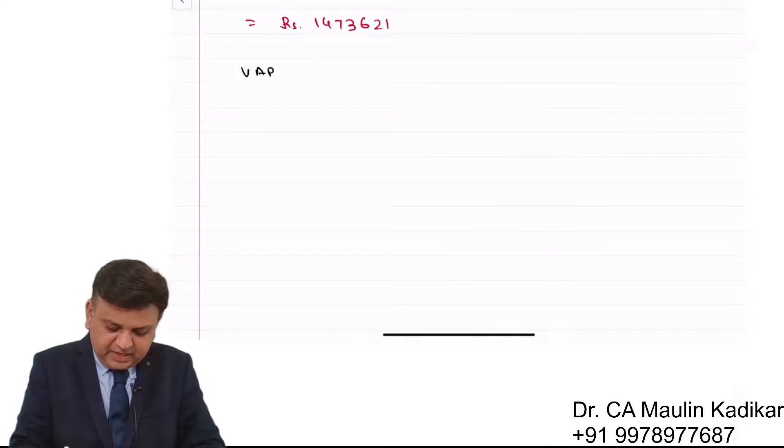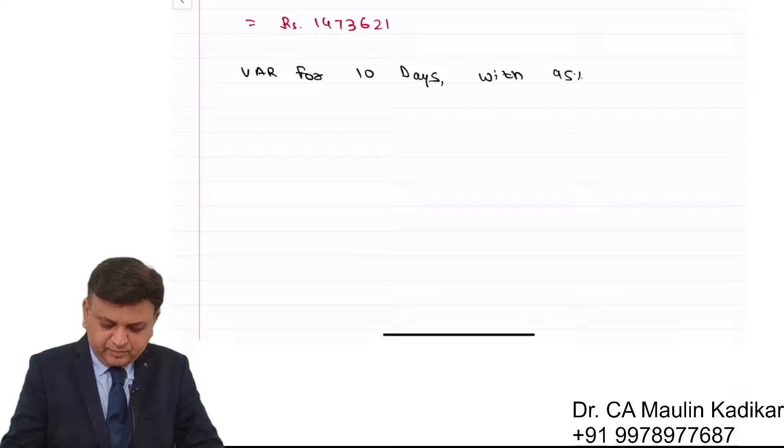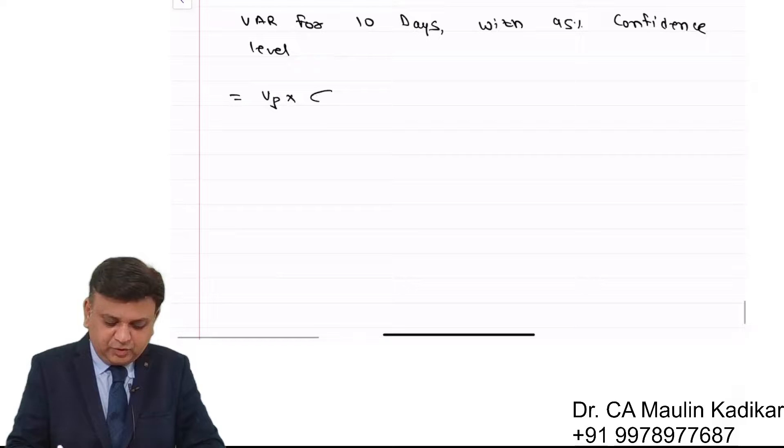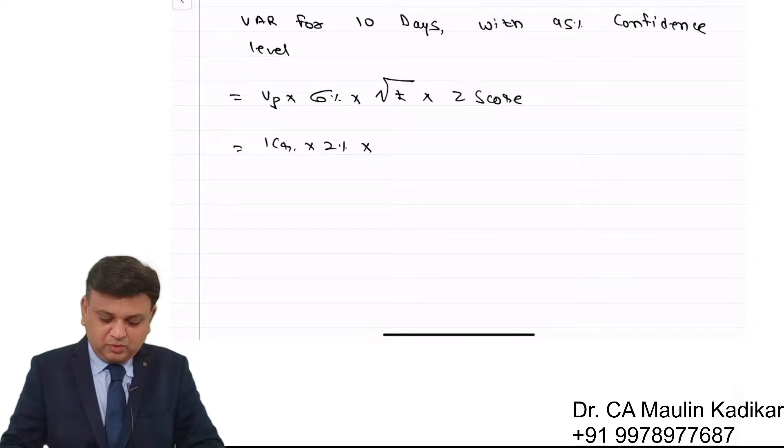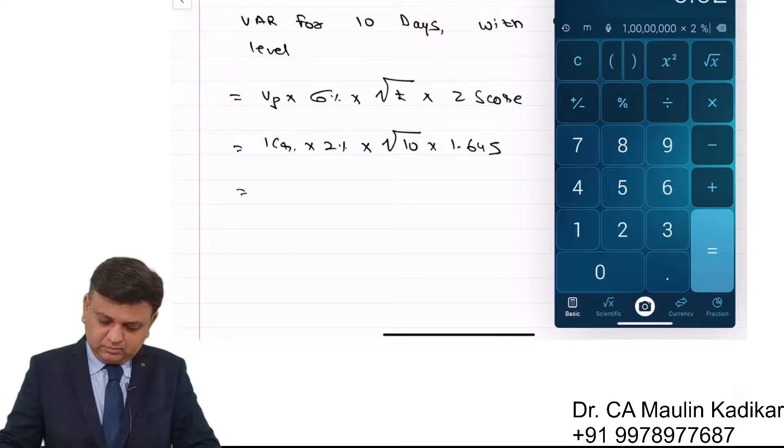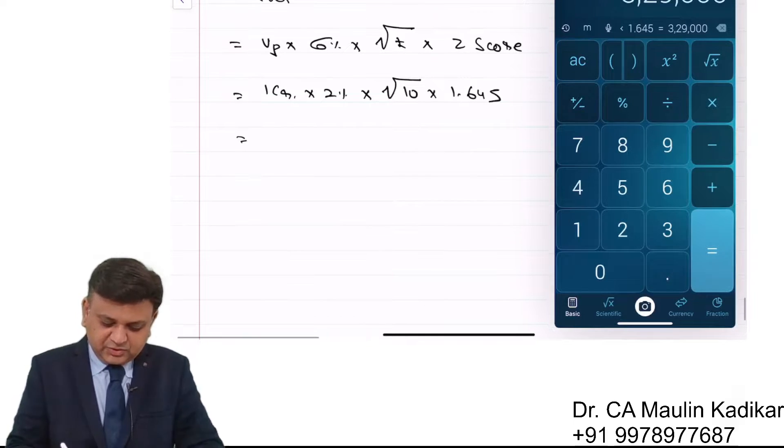Now similarly for 95% confidence level, VAR for 10 days with 95% confidence level: it is value of the portfolio times standard deviation, 1 crore times the square root of the time period times Z score. So 1 crore times 2% times square root of 10 times 1.645. So it is 3,29,000 times square root of 10.